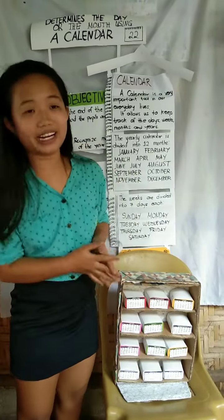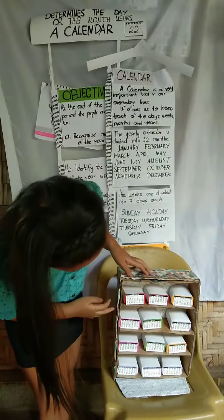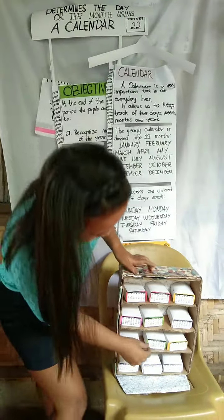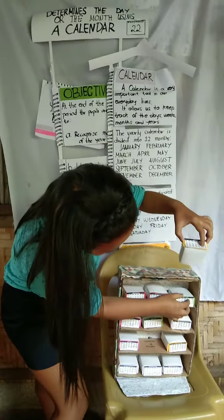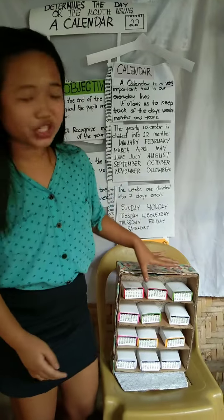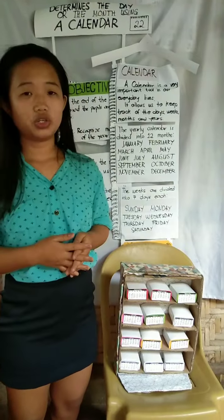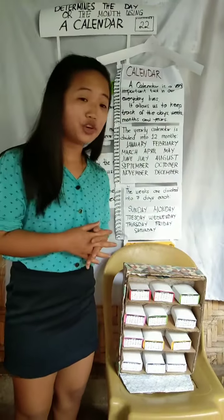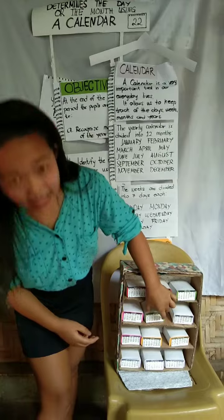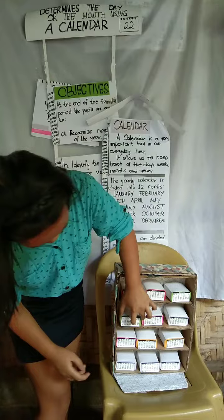Ano ang kasunod ng March? The April. Nandito ang April, put it here. Alam nyo ba kung ano ang kasunod ng April? The May. Lagay natin ang May dito. Ano ang kasunod ng May? June. Asan ang June? Here, we put it here.